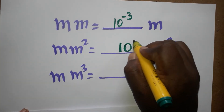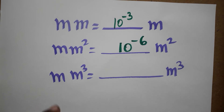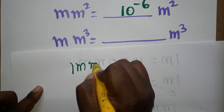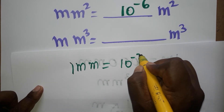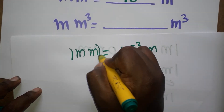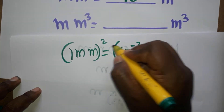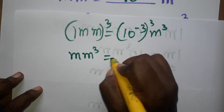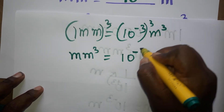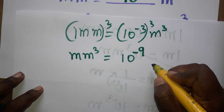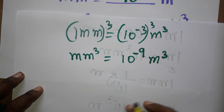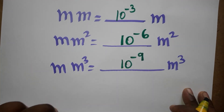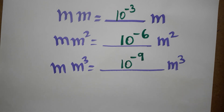Again, one millimeter cube is equal to how many meter cube? We already know one millimeter is 10 power minus 3 meter, so we just cube this. Millimeter cube equals 10 power minus 3 cubed, and 3 multiplied by 3 gives us 9, so we get 10 power minus 9 meter cube. Thank you for watching my video. If you like my channel, please subscribe.